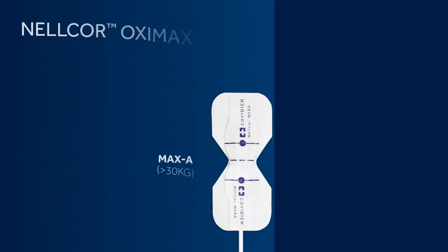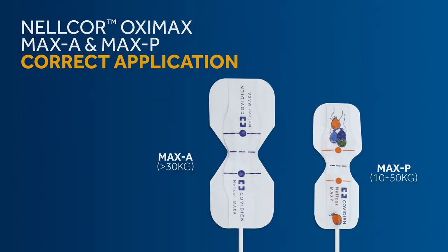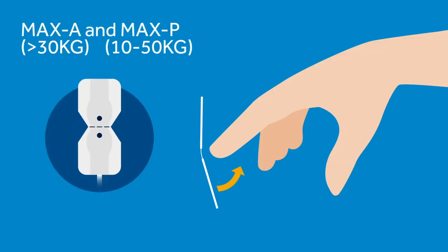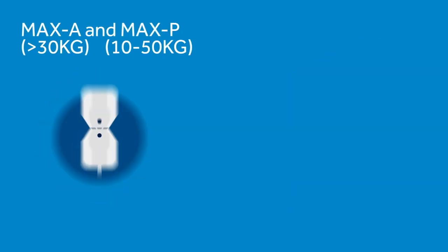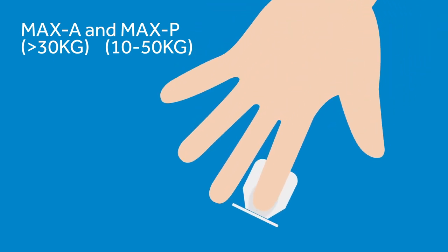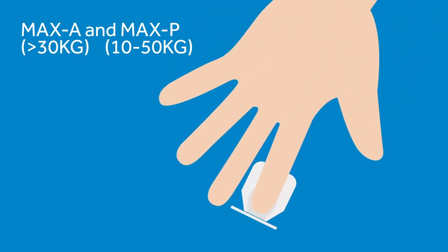To correctly apply the MAX-A or MAX-P sensors, an index finger is the preferred sensor site. Locate the window and alignment marks. Orient the sensor so the dashed line is centred at the tip of the finger and the windows oppose each other. Apply the non-cable half of the sensor to the bottom of the finger and wrap the adhesive flaps around the sides of the finger. Fold the cable end of the sensor over the top of the finger. Wrap the adhesive flaps around the sides of the finger. Anchor the sensor cable with a piece of medical grade tape.